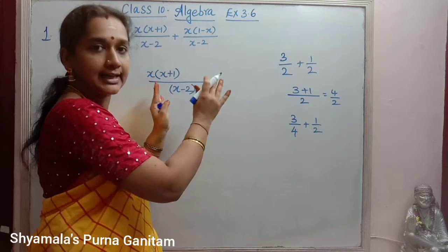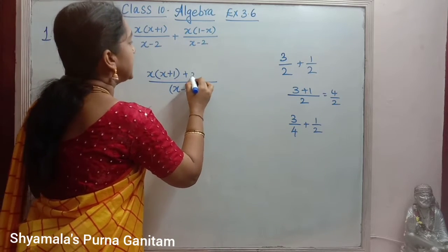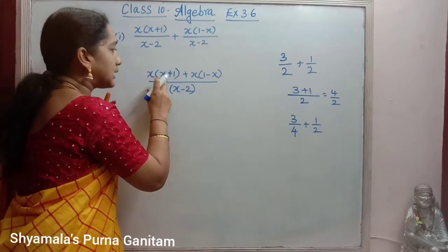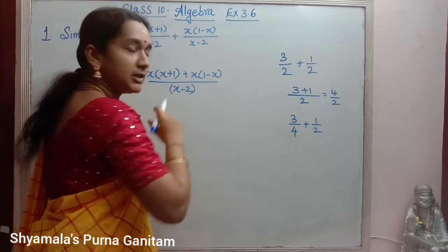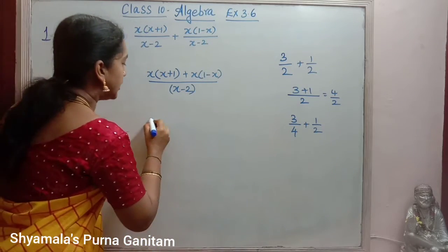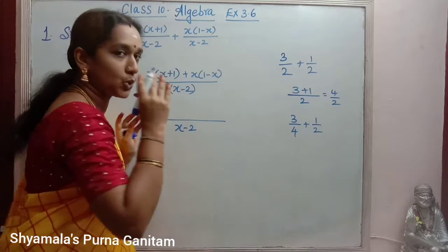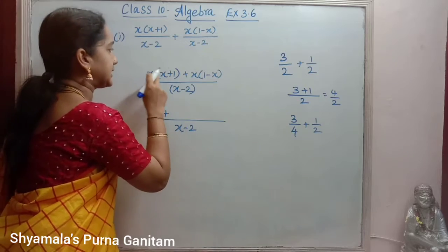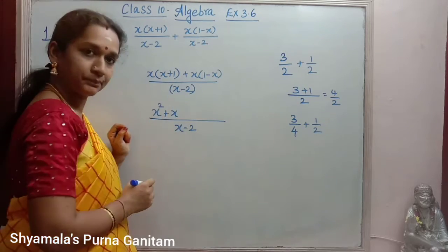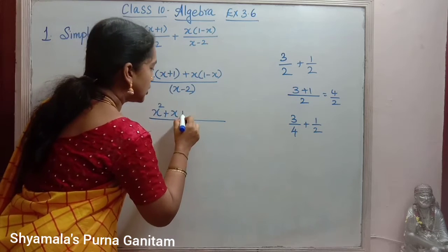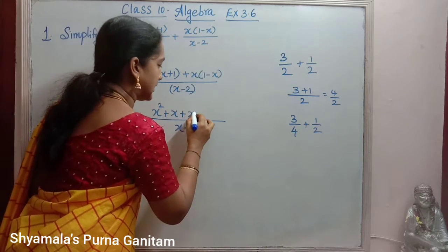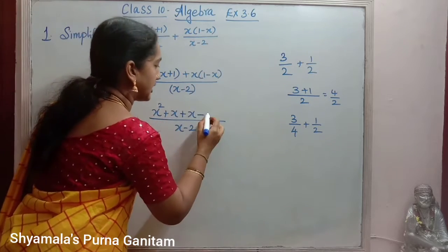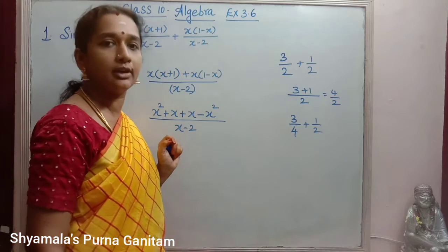So we write x(x+1) plus x(1-x) in the numerator over x minus 2. Now we multiply: x times x is x squared, x times 1 is x. Then, with the addition symbol carrying through, x times 1 is x, and plus times minus gives minus, so x times x is minus x squared.